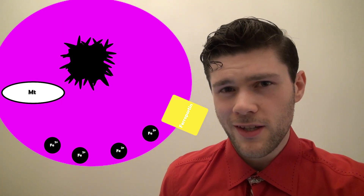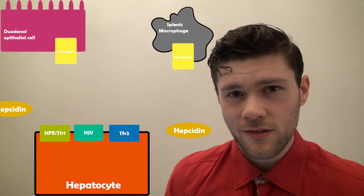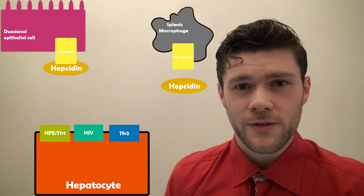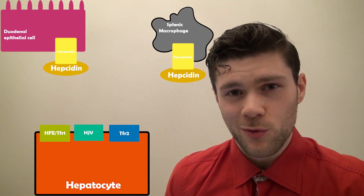How is this system regulated? Because you don't want too high iron in your body. This system is primarily regulated by hepatocytes, the cells of the liver. These cells have three receptors on their membrane for sensing iron levels in the blood: HFE/transferrin receptor 1, HJV, and transferrin receptor 2. If the iron levels are sensed as being too high, the hepatocytes will release hepcidin into the blood. This will go to epithelial cells in the gut and also to macrophages and block ferroportin proteins, thereby preventing iron from entering the blood from all sources.